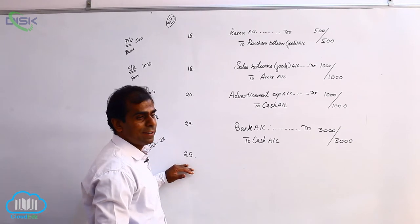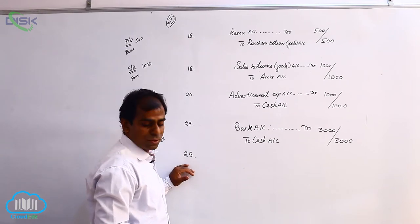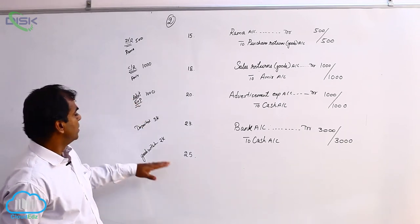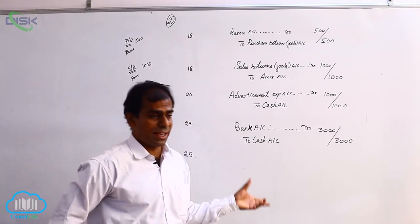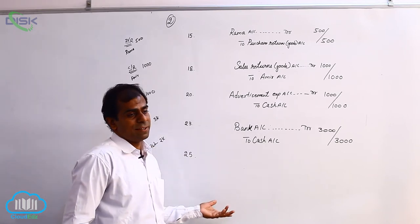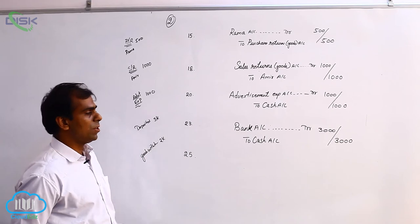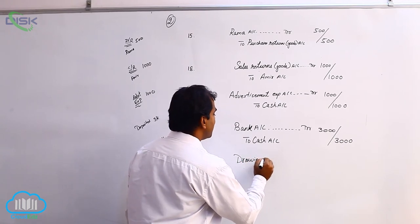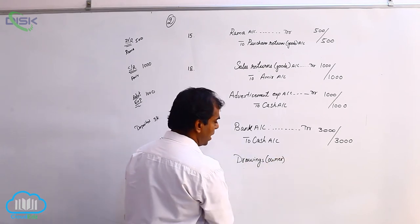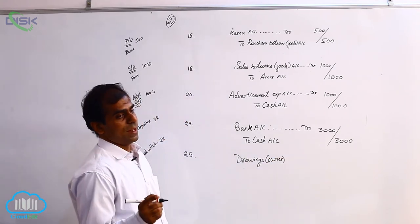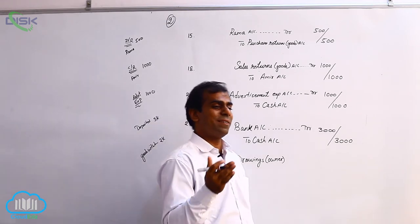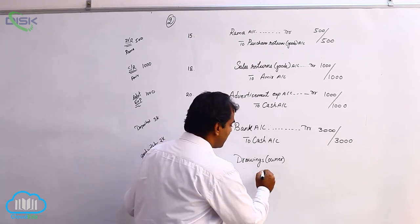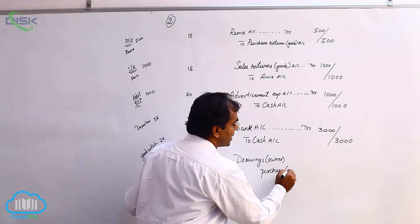The next transaction on 25th: goods withdrawn for personal use. Personal use means it is the owner who takes something belonging to the business for his personal work. The two accounts are: one is the owner — which we always refer to as drawings when he takes anything for personal work — and the other account is goods. Since we would have purchased the goods, we give it the name purchases. So the other account affected is purchases, representing goods.